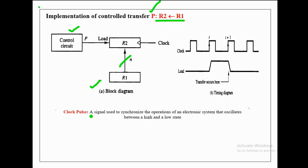A clock pulse is a signal used to synchronize the operations of an electronic system, oscillating between a high and low state. The clock pulse is applied to register R2 in order to synchronize the load micro operation of R2. Let's discuss how this clock pulse synchronizes the load micro operation using a timing diagram, which shows the clock pulse and load input signal.